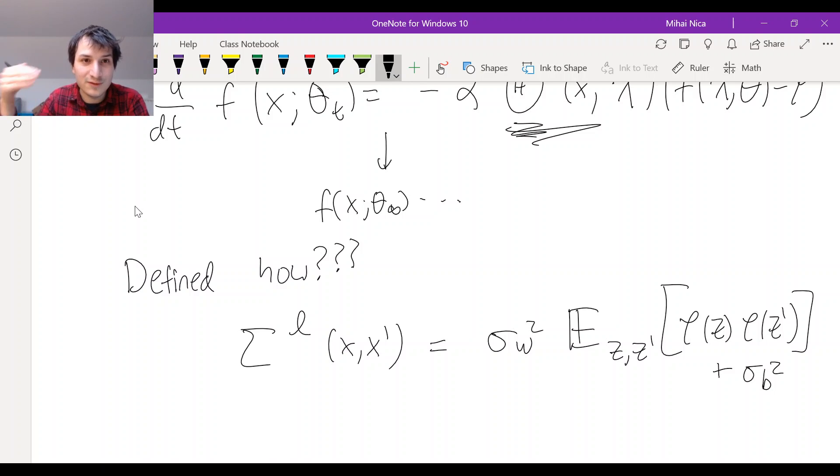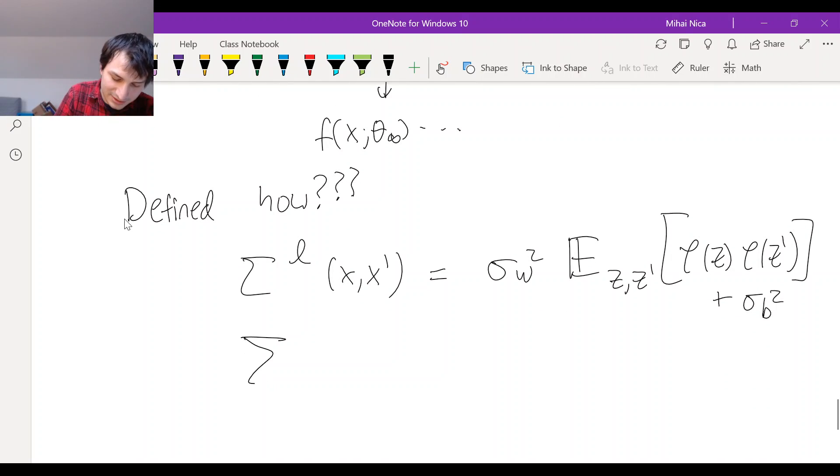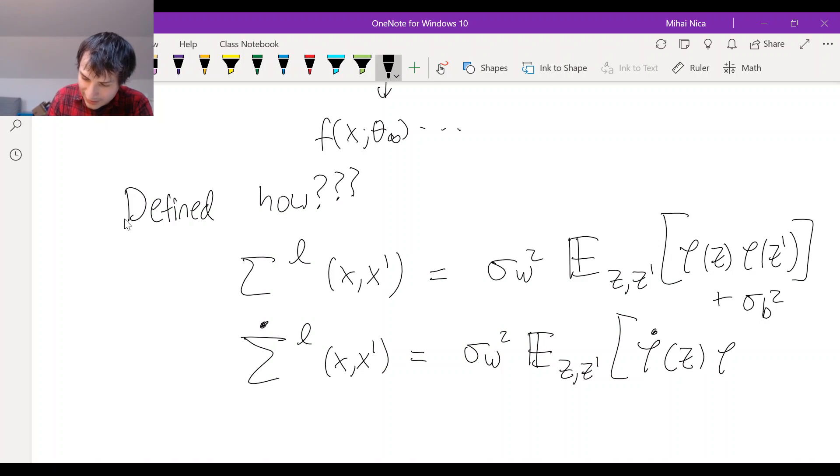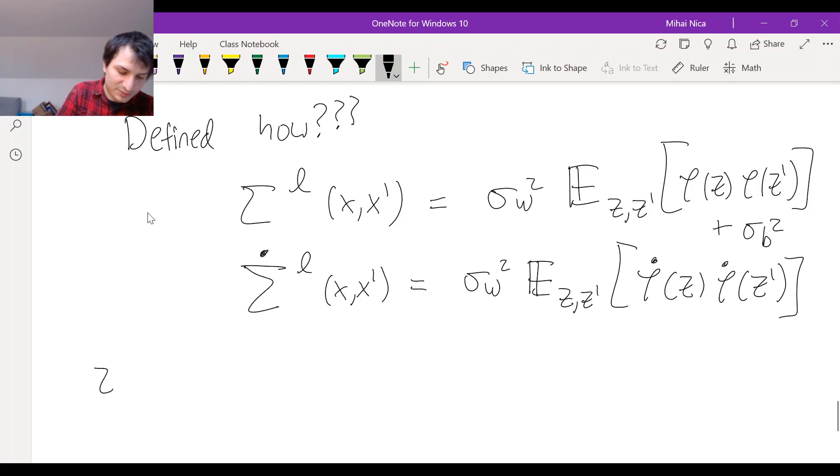You need something else now, which is like the derivative version of this. So not literally the derivative, but we're going to call it sigma dot of L of x, x prime. And that's the same thing, but instead of using phi, you use the derivative of phi. So sigma w squared, expected value z, z prime, phi dot of z, phi dot of z prime. So it's the same thing with the derivatives. There is no sigma b on this one. And z, z prime are as before, taken to be Gaussian with mean zero, and this covariance structure from the previous layer.